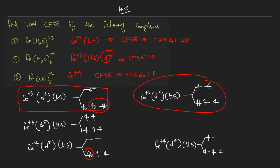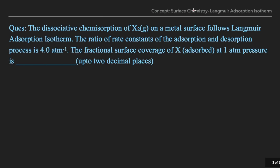To those who made mistakes — it's a part of learning, so that's fine. Today we take a question from surface chemistry, specifically from the Langmuir adsorption isotherm. The question is a numerical answer type: 'The dissociative chemisorption of X₂ on a metal surface follows the Langmuir adsorption isotherm. The ratio of the rate constants of adsorption and desorption is 4 atm⁻¹. The fractional surface coverage of X adsorbed at 1 atm pressure is how much?'